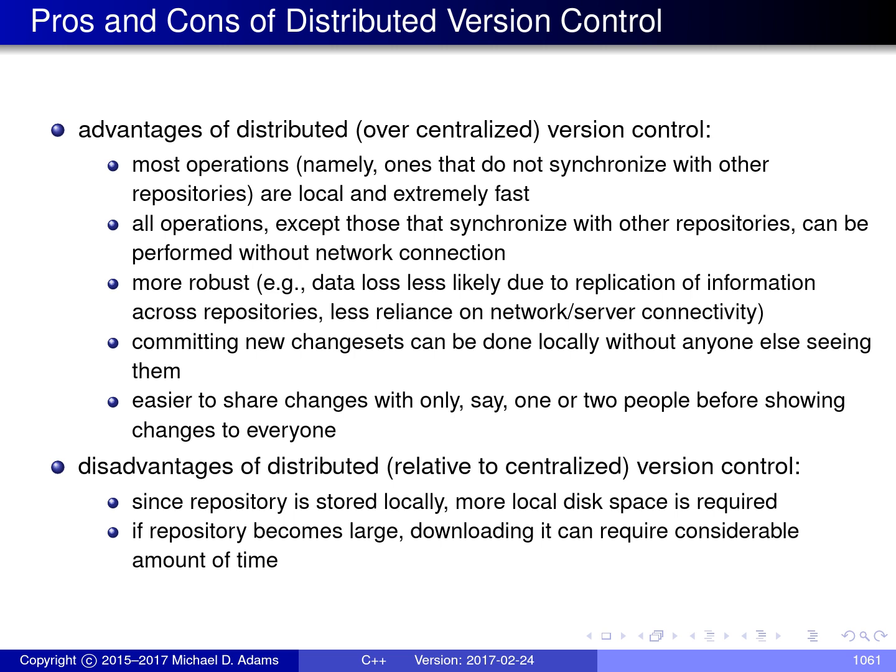Furthermore, since most operations only need information available in the local repository, most operations do not require a network connection. This could be advantageous in situations where network connections are unreliable or unavailable. Another advantage of distributed version control is greater robustness: better protection against data loss is achieved through replication of information across repositories, and increased resilience against network failures is achieved by ensuring that relatively few operations require a network connection.